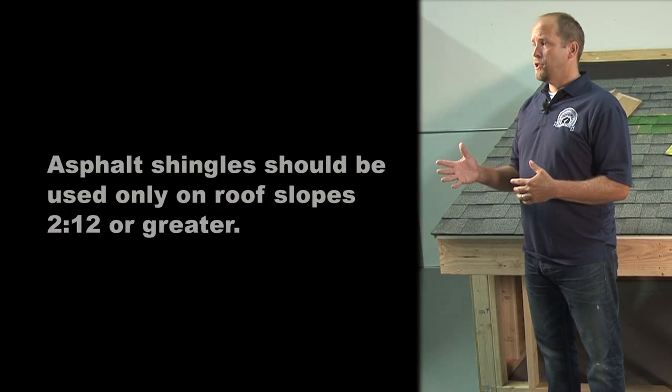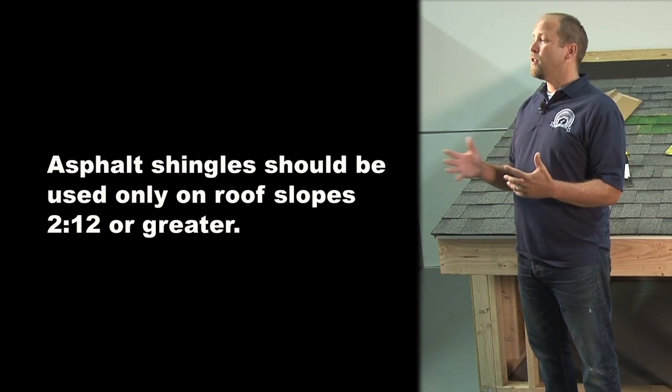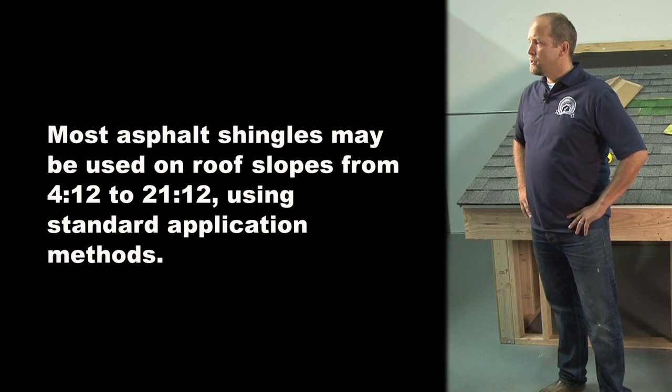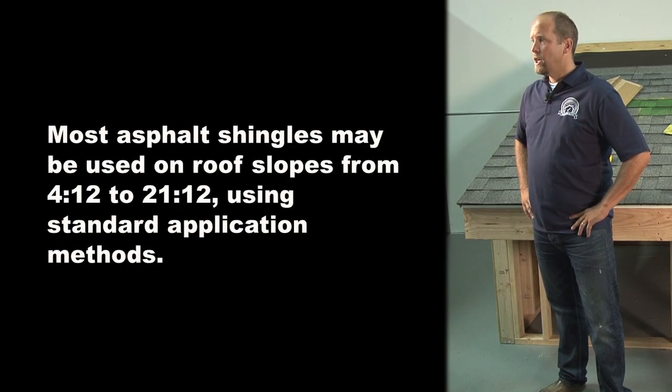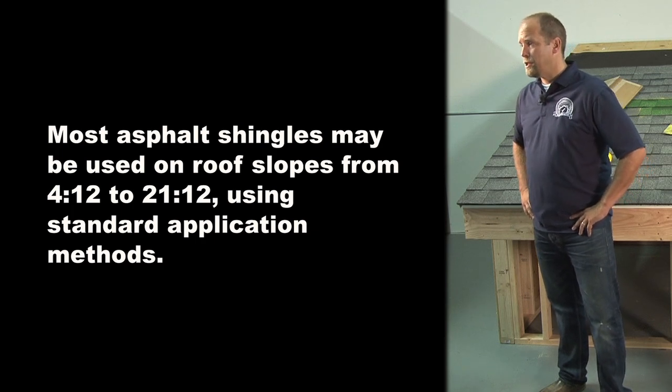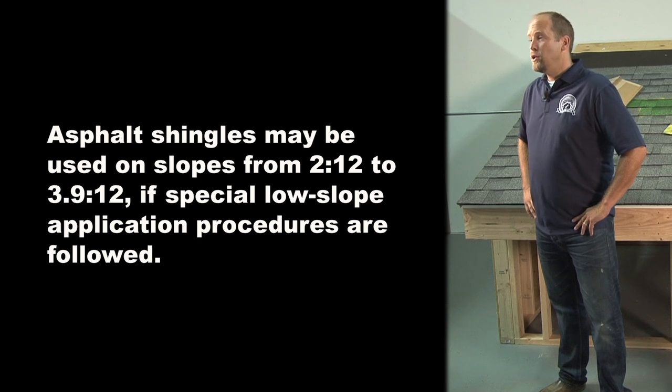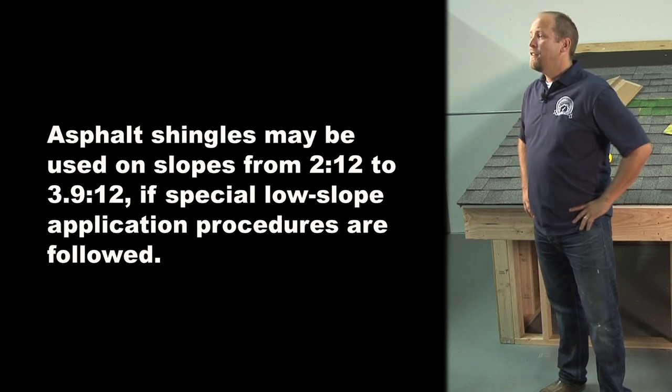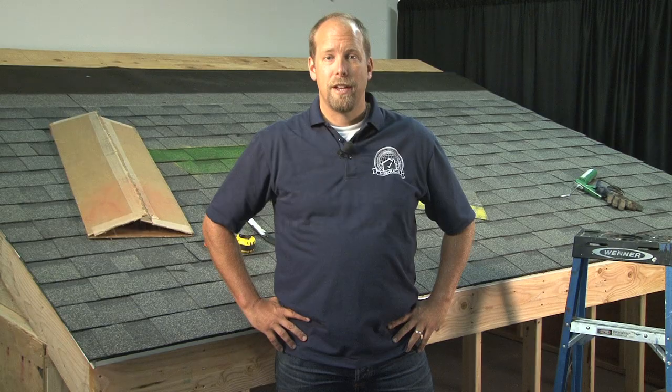The slope of a roof affects the surface drainage of water and can determine the type of roof covering materials that should be installed. Asphalt shingles should be used only on roof slopes of 2 in 12 or greater, as they are designed to shed water and are not meant to serve as a waterproof barrier. Most asphalt shingles may be used on roof slopes from 4 in 12 to 21 in 12 using standard application methods. Asphalt shingles may be used on slopes from 2 in 12 to 3.9 in 12 if special low-slope application procedures are followed. An inspector will usually find roll roofing materials installed on slopes of less than 4 in 12.